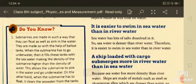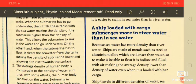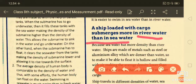Next: A ship loaded with cargo submerges more in river water than in seawater. The same answer applies - seawater has more density than river water due to the presence of salt. Ships are made of metals such as steel or aluminum alloys, which are denser than water.